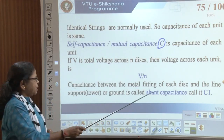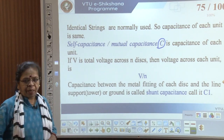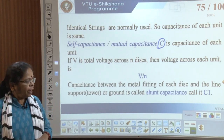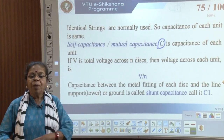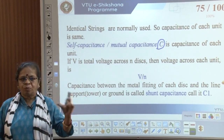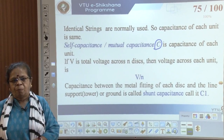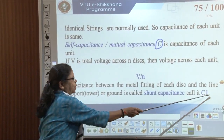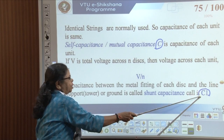Each disk has a metal fitting, and therefore there will be a capacitance between the metal fitting and the grounded tower. This capacitance is denoted by C1.